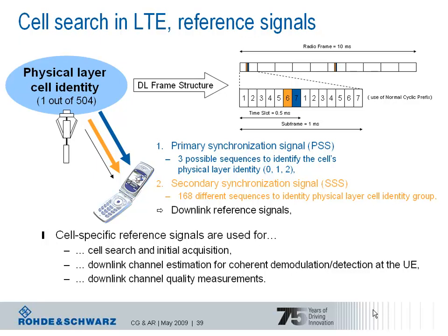The cell-specific reference signals fulfill three tasks: they are used for initial acquisition, coherent demodulation and detection at the UE, as well as for channel quality measurement. To estimate channel quality and help the eNodeB make scheduling decisions, the network informs the UE via system information about the power level at which the downlink reference signals are transmitted. The UE measures that power level, and the difference translates to a channel quality indicator (CQI) value, which is reported back to the network. CQI values correspond to a specific modulation scheme — QPSK, 16QAM, or 64QAM — and indicate which channel coding should be applied. The cell-specific downlink reference signal can be seen as a lighthouse, where the power level refers to the height of that lighthouse. In the context of cell search, the reference signal helps the terminal become fully synchronized in frequency and time.